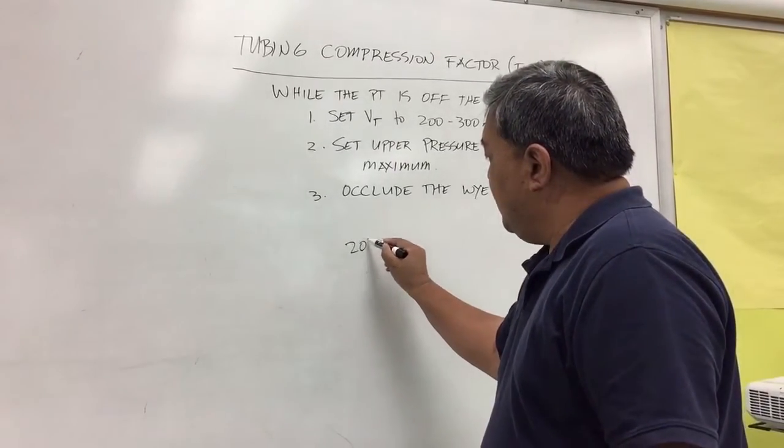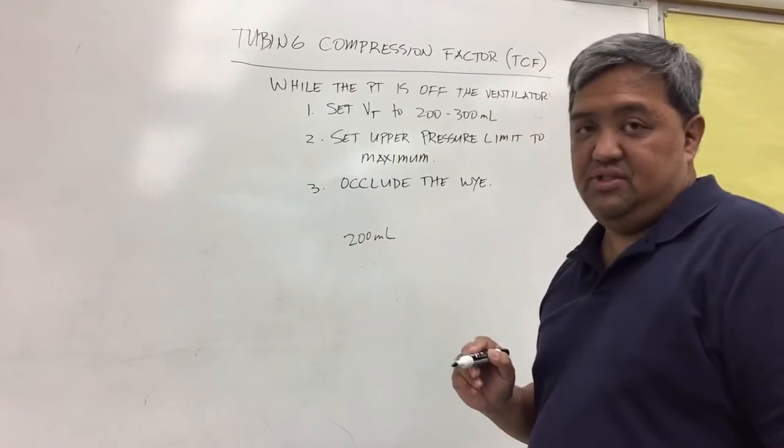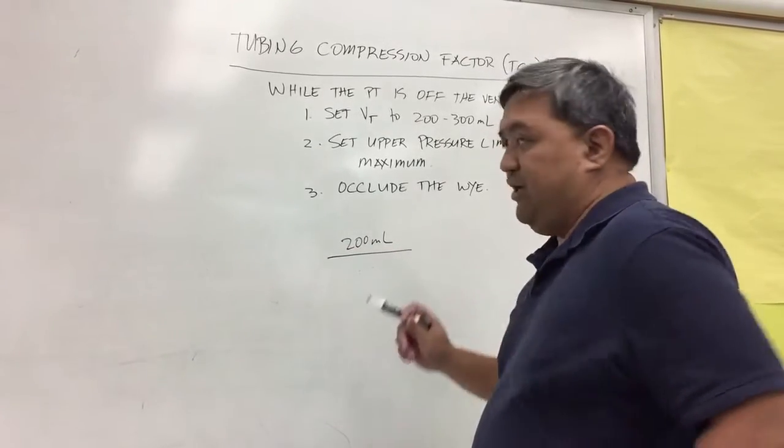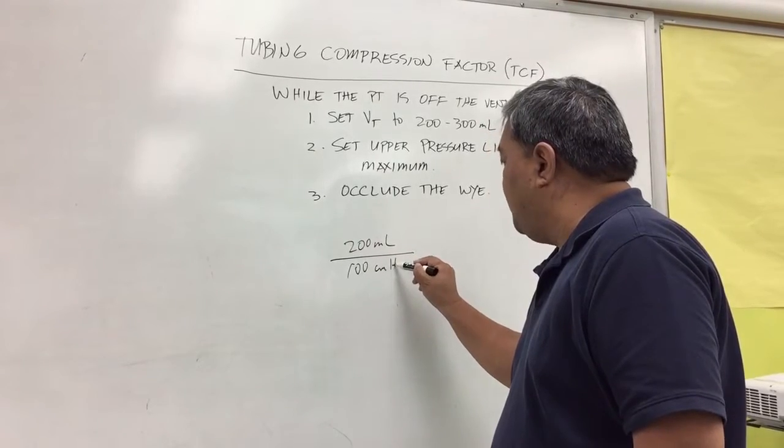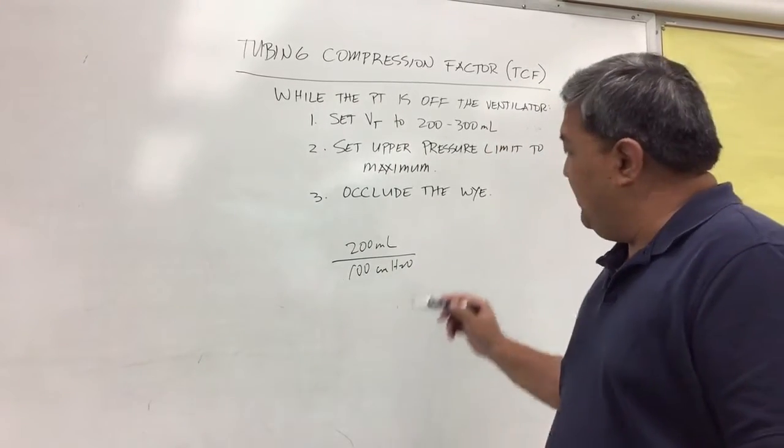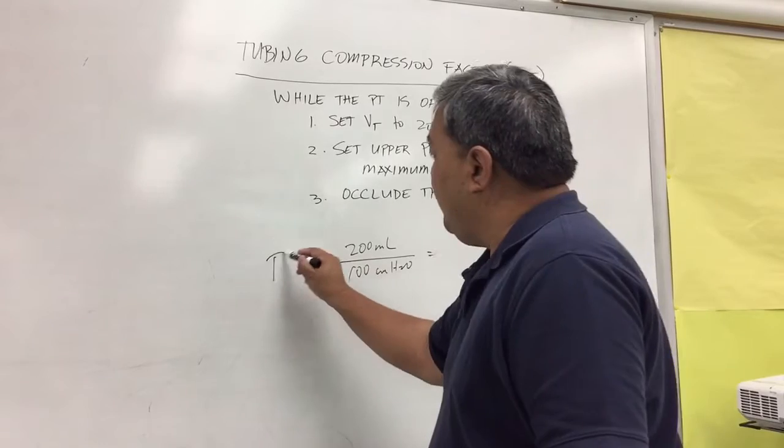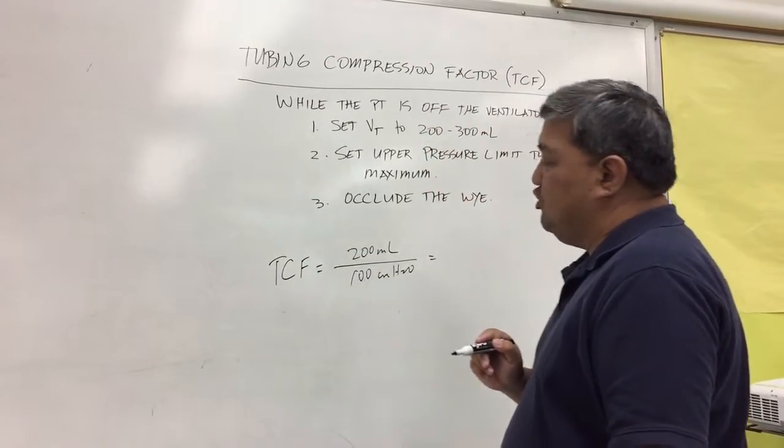Once you occlude the Y, you will generate a certain pressure. So let's say you set your volume at 200 mls, and the pressure generated because you occlude the Y is about 100 centimeters of water pressure. Based on this, you will now have a tubing compressibility factor of 2 mls per centimeter of water pressure.